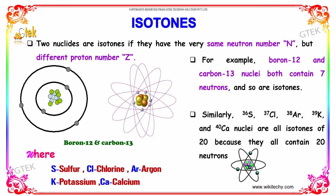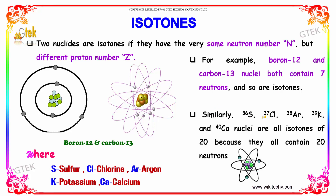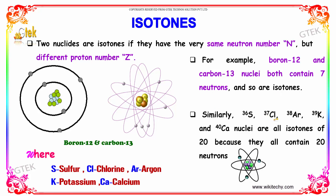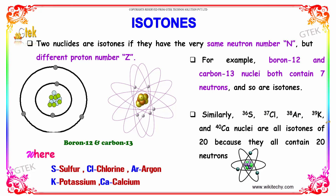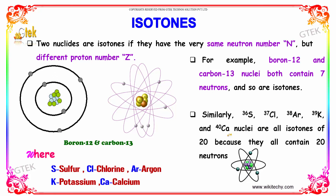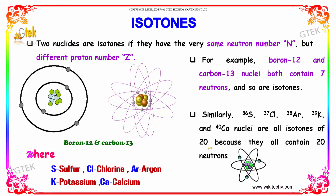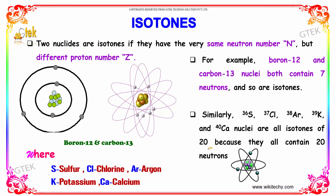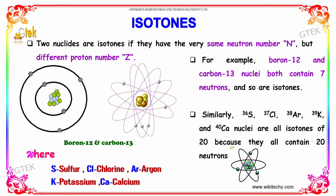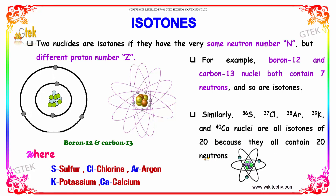Similarly, sulfur-36, chlorine, argon, potassium, and calcium are all isotones of neutron number 20. They are isotones because they all contain 20 neutrons.